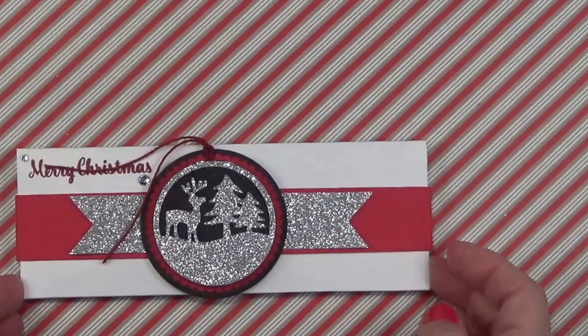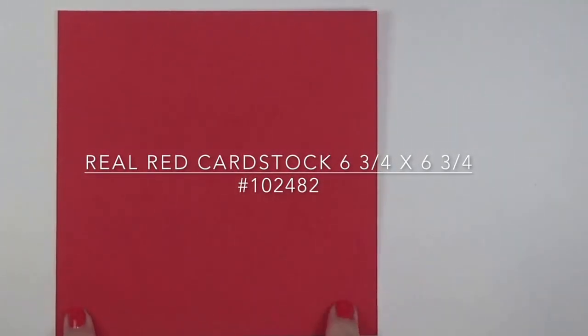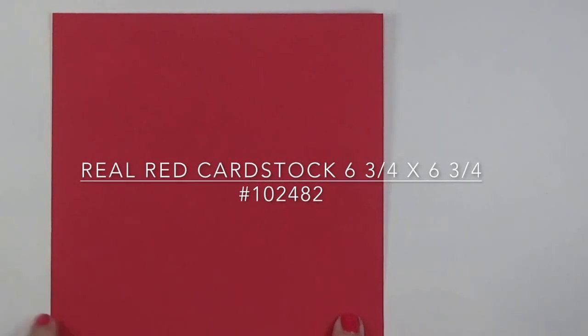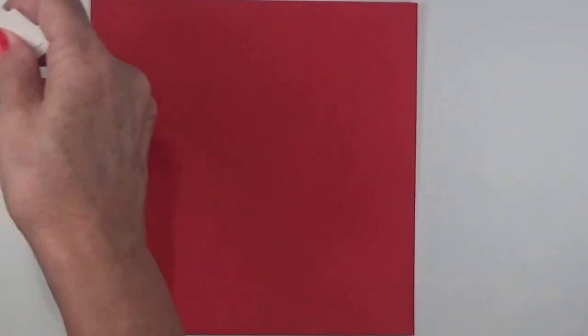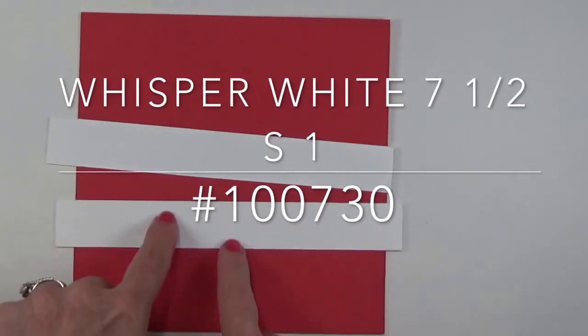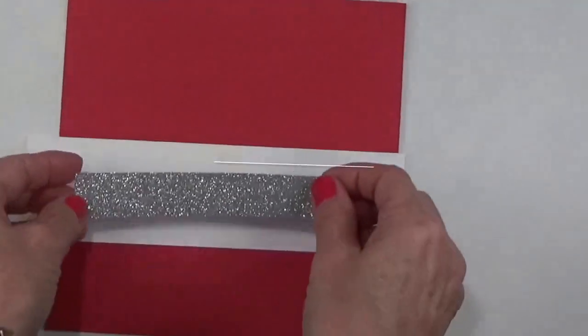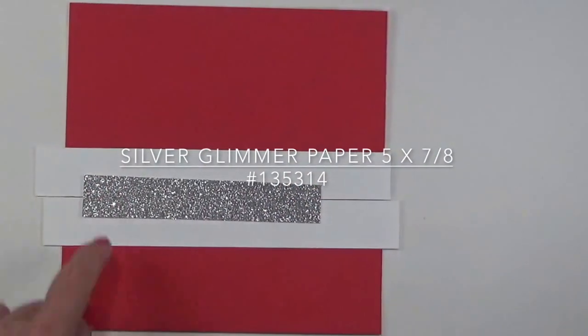Let's get started on how to make this project. You're going to need a piece of real red cardstock cut six and three-fourths by six and three-fourths inches. You'll need two strips of whisper white cut to seven and a half by one. These will go together to form the belly band. You need one piece of silver glimmer paper cut at seven-eighths of an inch wide by five inches long.